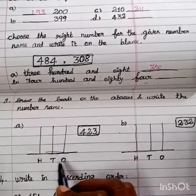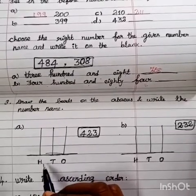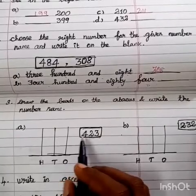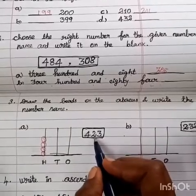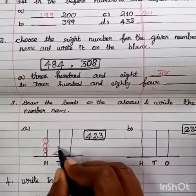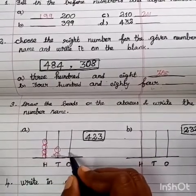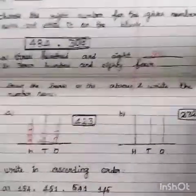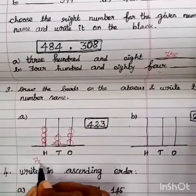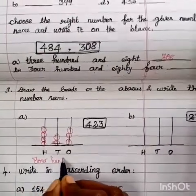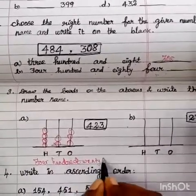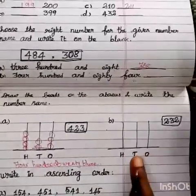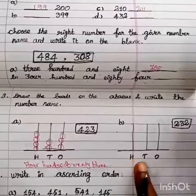Third question, draw the beads and write the number name. For 423, we need to draw ones, tens, hundreds. First hundreds, 1, 2, 3, 4. Then tens, 1, 2. Then ones, 1, 2, 3. So number name is four hundred and twenty-three. Question b, 232, hundreds, tens, ones.